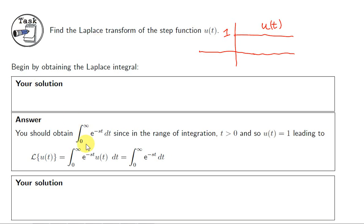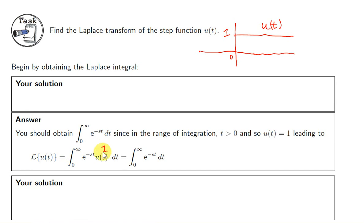Now we're going to get L of u(t). We apply the definition of the Laplace transform. We're integrating from 0 to infinity, but we know that u(t) has the value 1 for values of t greater than 0. So basically, we just have e to the power of minus st multiplied by 1, which is e to the minus st.